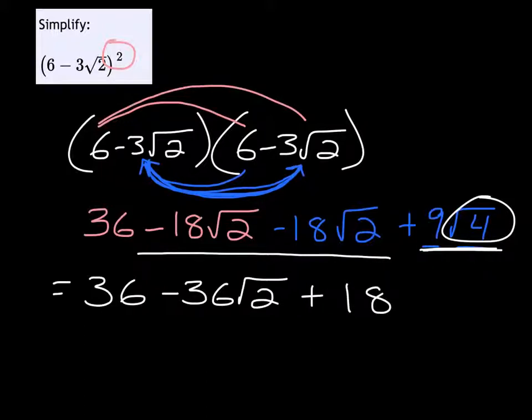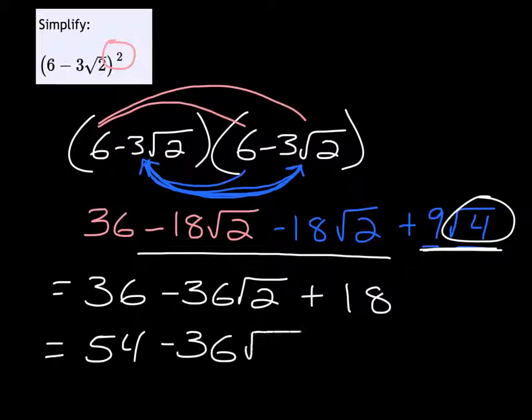And then the last step is all I need to do is put this 36 and 18 together because they're like terms. Getting 54 for 36 plus 18 minus 36 root 2.